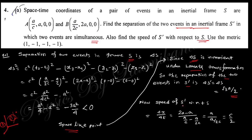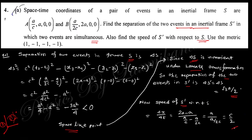The speed of S prime with respect to S is obtained as delta x divided by delta t. Here delta x is the spatial separation (2a minus a) and delta t is the time separation. You finally obtain the speed of S prime with respect to S, which is c over 2.